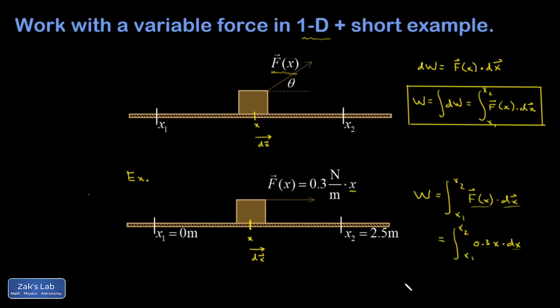So I'm ready to integrate now, and I probably should have written the actual numbers on these limits, so I'll just put them in like this. And when I integrate x, I get one-half x squared, so I have 0.3 times one-half x squared evaluated from zero to 2.5.